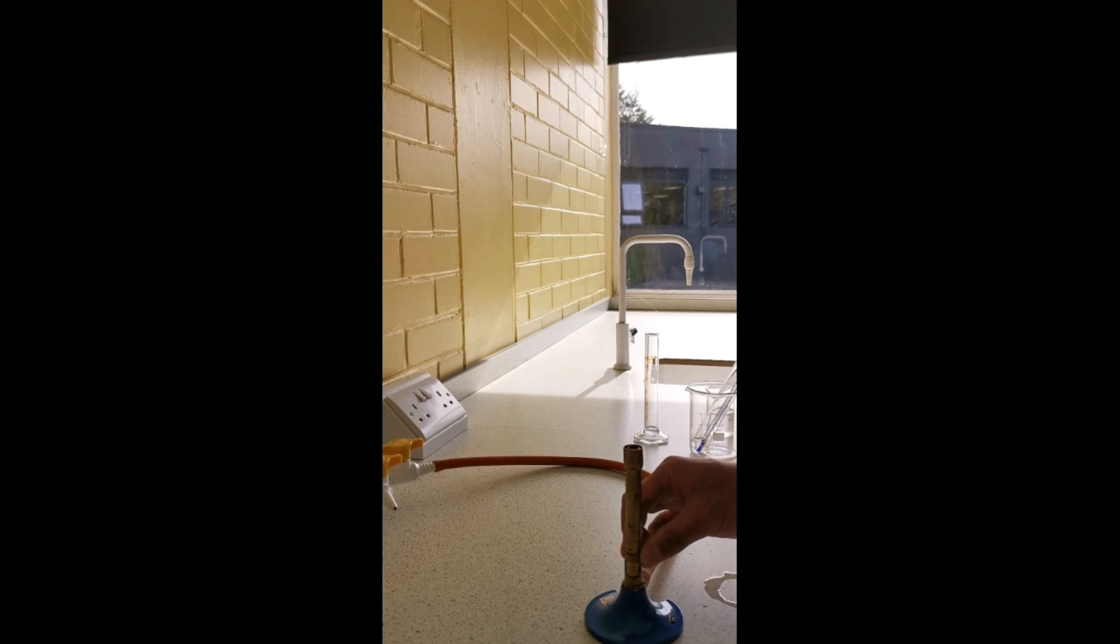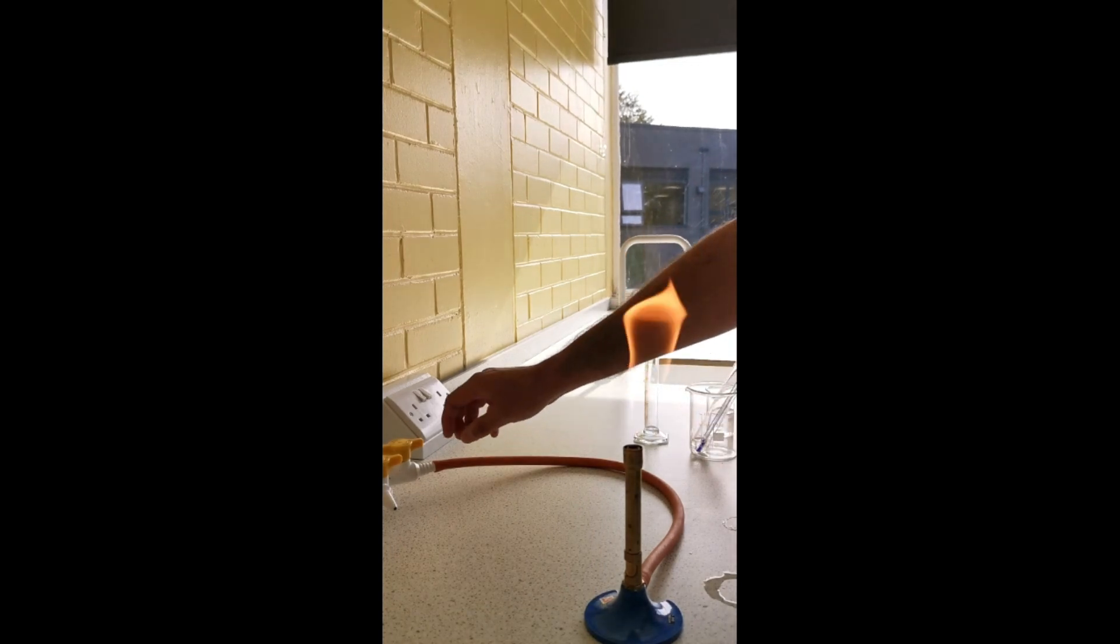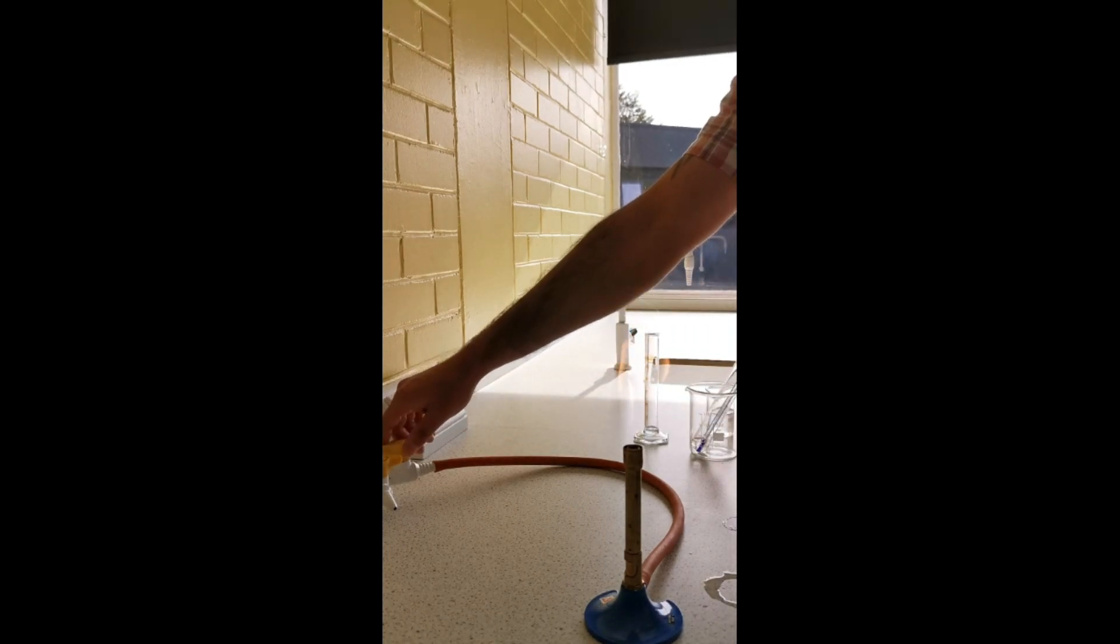When you're not using it, you want to turn it back on to the orange safety flame so everyone can see that and we know that this Bunsen burner is lit.